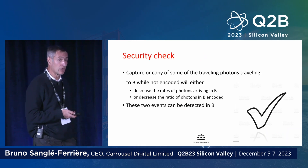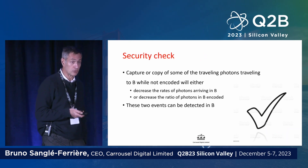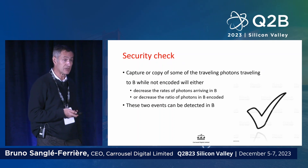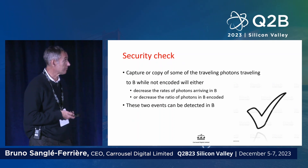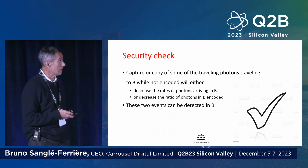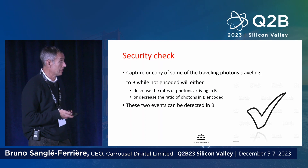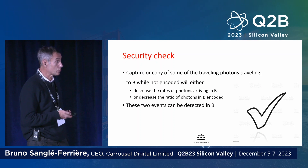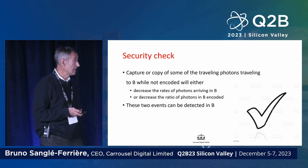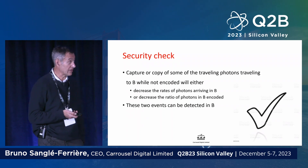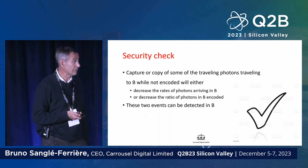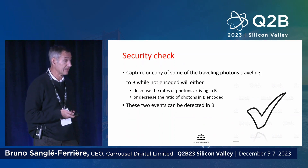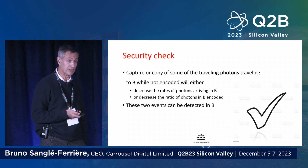We add a security layer, a bit similar to QKD, to make sure that the message hasn't been listened to. If some people try to capture or copy some photons traveling to B, there will be either fewer photons arriving in B or the quality of entanglement will have decreased, and therefore we won't be able to decode the message.